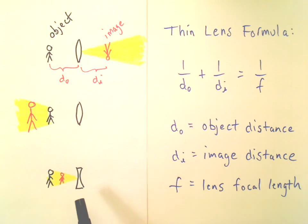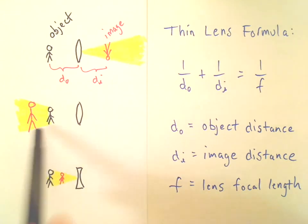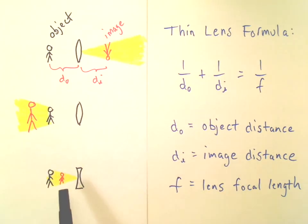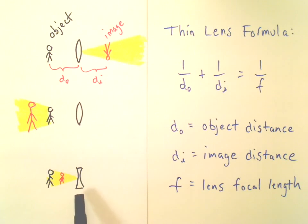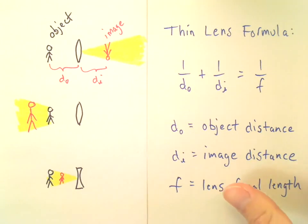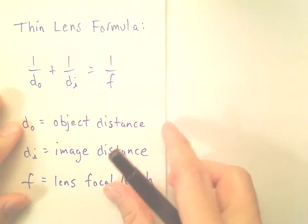In the case of the diverging lens, it's just the reverse: the image will be closer to the lens than the object was, and it will be smaller. This is the kind of lens that nearsighted people wear. Nearsighted people have difficulty focusing on things that are too far away, so they like to look at an image that's closer. And the question is: how does all of this relate to plus and minus?